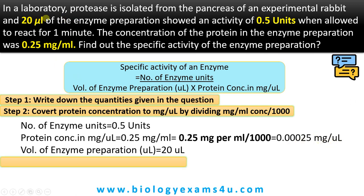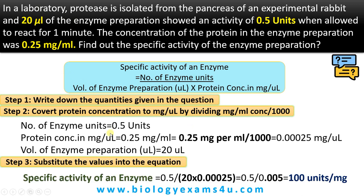Now we substitute the values into the equation. Specific activity equals 0.5 (number of enzyme units) divided by 20 (volume of enzyme preparation in microliters) multiplied by 0.00025 (protein concentration in mg per microliter). That gives 0.5 divided by 0.0005, which equals 100 units per mg. So 100 units per mg is the answer.